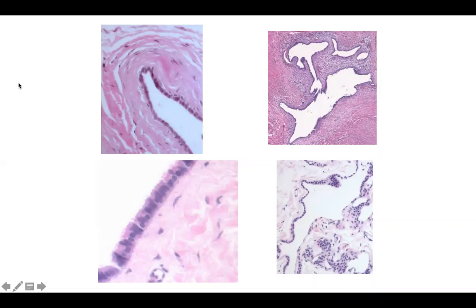Welcome back to DD60. Today we'll contrast four entities with a large white space that is lined by cells. It is most important to look at the cell shape and any unique characteristics. The stroma might also be helpful. Can you guess the diagnosis for these four?